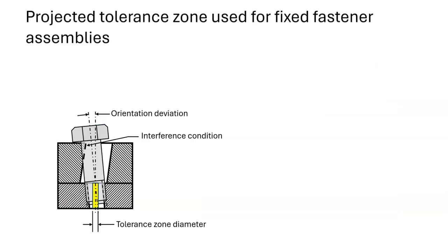The reason for using a projected tolerance zone is because a threaded hole is usually specified. This results in a tolerance zone inside the part that the axis of the pitch diameter must fit within.